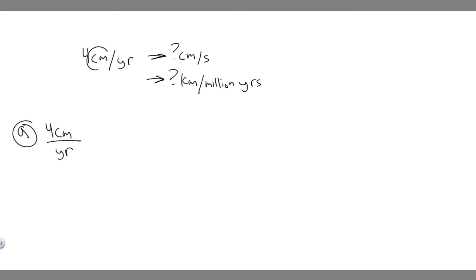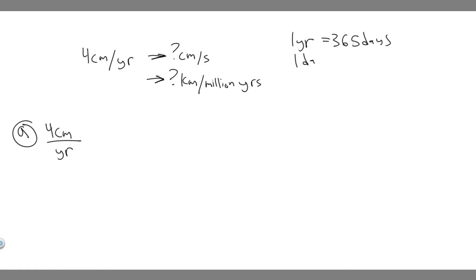You should notice that the centimeters stay the same, but we have to convert from years to seconds. There are a bunch of conversions you need to know: one year is equal to 365 days, one day is equal to 24 hours, one hour is equal to 60 minutes, and one minute is equal to 60 seconds. These are the conversions we're going to go through.